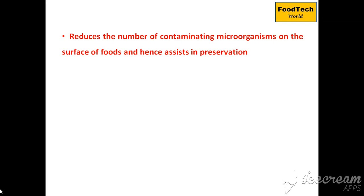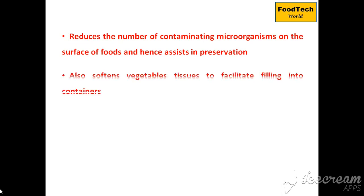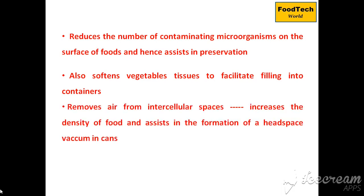The third function of blanching is to soften the vegetable tissues to facilitate filling into containers during canning. The fourth function is to remove air from the intercellular spaces of vegetables, which increases the density of the food and helps in the formation of a headspace vacuum in cans.